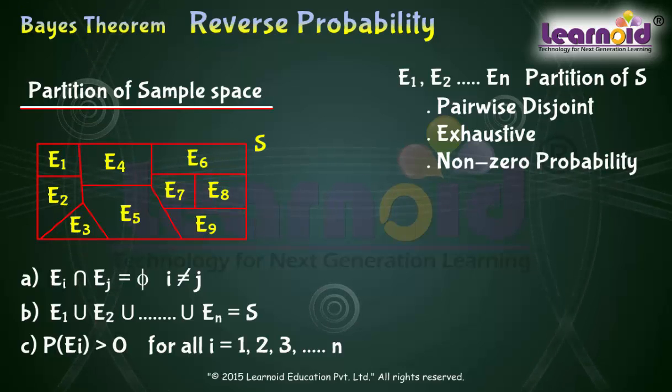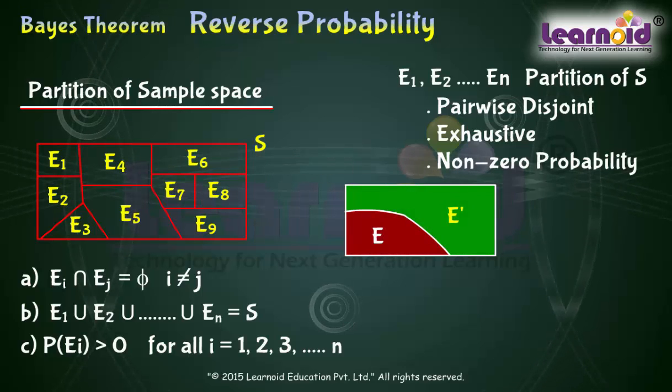For example, any non-empty event E and its complement E' together form a partition of sample space S. Since E intersection E' is a null set, and E union E' will make complete sample space.